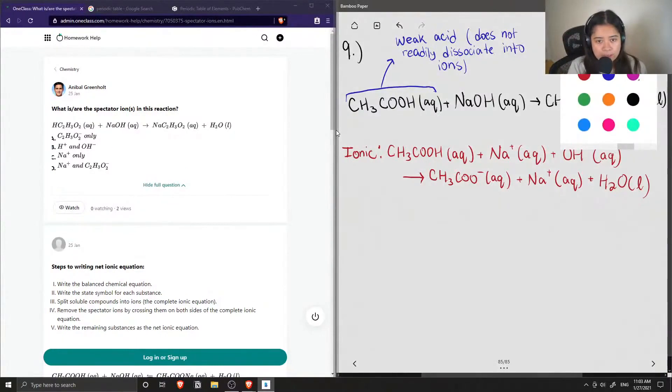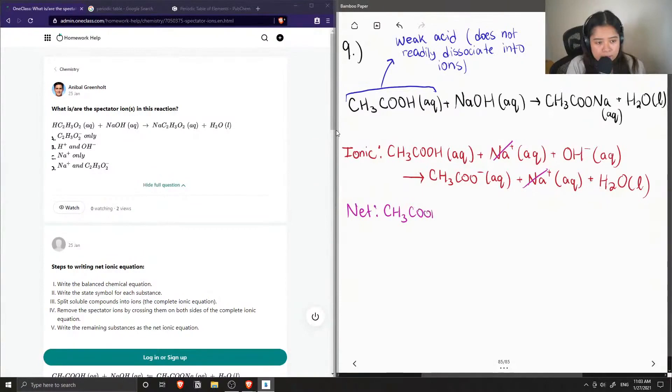So now this is our ionic equation. And when we write out our net ionic equation, this is when we would cross off any spectator ions that appear on both our reactant side and our product side. So in this case, it's sodium. And now we can write out our net equation, which is the acetic acid plus OH minus produces the acetate ion plus water.